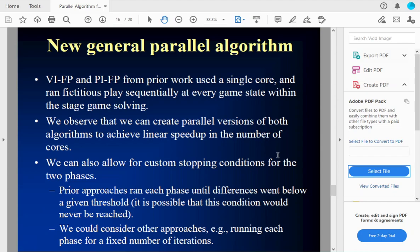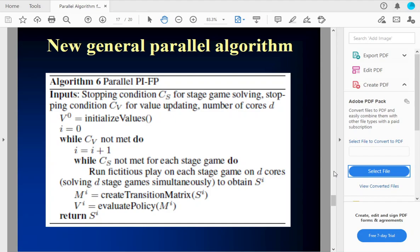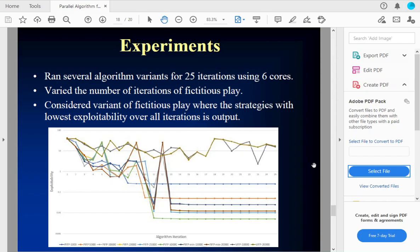And so, we have a new algorithm that is going to generalize these. In one advantage is that it's going to be parallel. And we notice both of these algorithms can be parallelized, in order to obtain a linear speed up in the number of cores. The previous approach is just use a single core and solve each game sequentially. We can also, we have several other improvements that we've implemented. One thing we can do is we can use different stopping criteria because the prior approaches they ran until they got these differences below a threshold. You may not even get, these algorithms are not guaranteed to converge. You may never get below that threshold. You can do a variety of other approaches, for example, pick a fixed number of iterations and run it for that many iterations or a variety of other things. And so we have our new parallel PIFP that obtains a linear speed up and has custom stopping conditions.